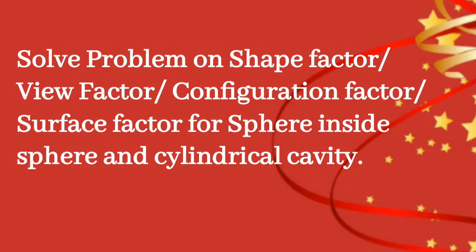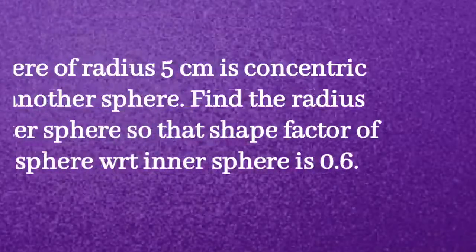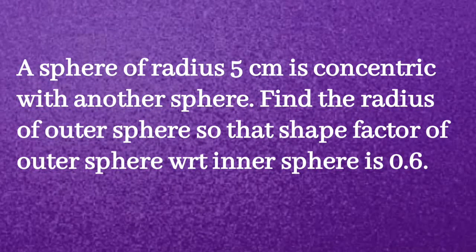We will solve one problem on shape factor, also known as view factor, configuration factor, or surface factor, for a sphere inside a sphere and a cylindrical cavity. The given question: a sphere of radius 5 cm is concentric with another sphere. Find the radius of the outer sphere so that the shape factor of the outer sphere with respect to the inner sphere is 0.6.